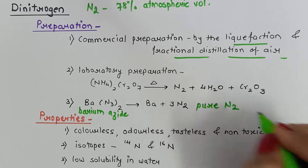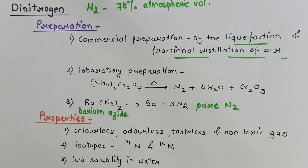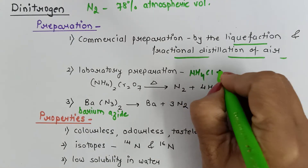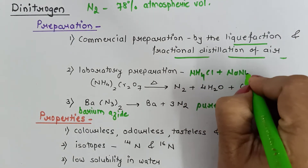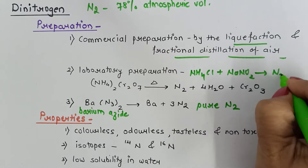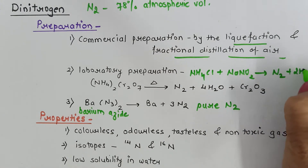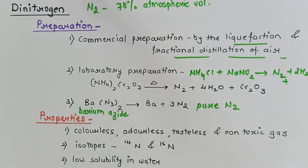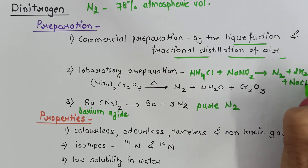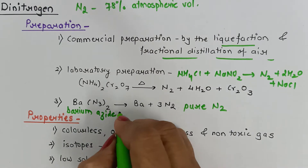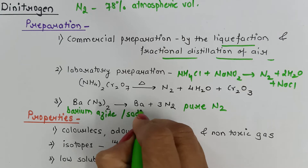Nitrogen can be obtained by one more method where ammonium chloride is treated with sodium nitrite, giving nitrogen as the main product along with water and sodium chloride. In another method, instead of barium azide, sodium azide can also be used, and this method is considered an important one.